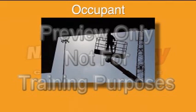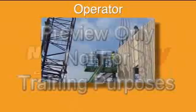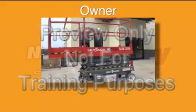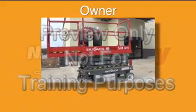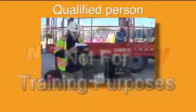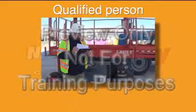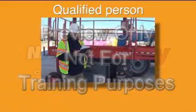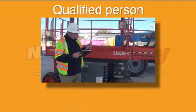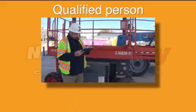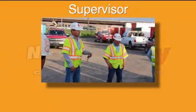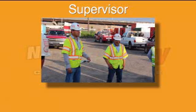Occupant: anyone that is on the work platform. Operator: persons that are qualified to operate an MEWP. Owner: the entity who has possession of the MEWP by virtue of purchase, rental, or other legal possession. Qualified person: a person who, by possession of a recognized degree, certificate of professional standing, or by extensive knowledge, training, and experience, has successfully demonstrated their ability to solve or resolve problems related to the subject matter, the work, or the project. Supervisor: a person assigned by the user to monitor operator performance and supervise their work.